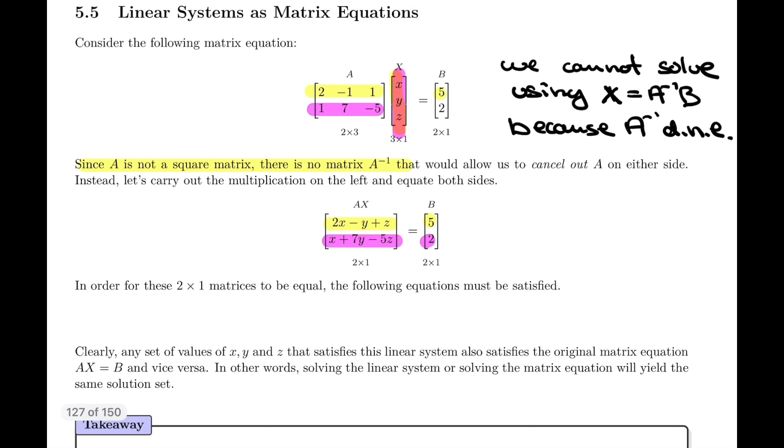When you look at that, I think it's easy to see that the only way that the matrix on the left can equal the matrix on the right is if the first entry, 2x minus y plus z on the left, is equal to 5, and the second entry on the left, position 2-1, that entire entry has to equal 2. The only way two matrices of the same size can be equal is if the respective entries are equal.